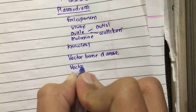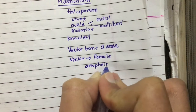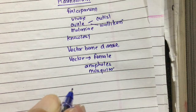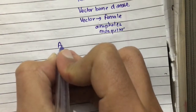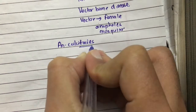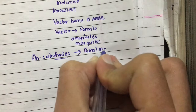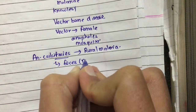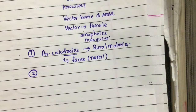Since malaria is a vector-borne disease, a vector is needed for its transmission. The vector is the female Anopheles mosquito. Different Anopheles species are responsible for transmission. The important one is Anopheles culicifacies, which is responsible for transmission of malaria in rural areas — rural malaria. You can remember it as culicifacies being more common in rural areas.